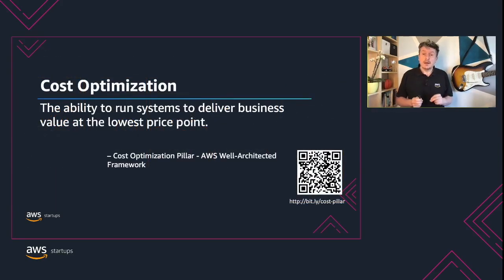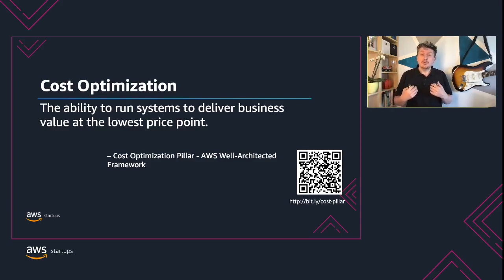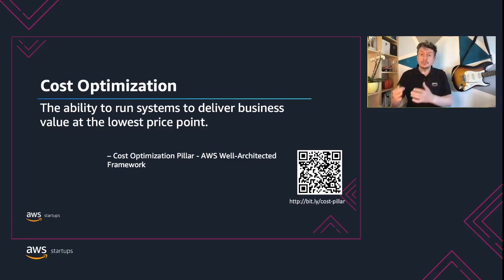Let's first see how we define cost optimization. Cost optimization is the ability to run systems to deliver business value at the lowest price point. We in AWS want you to run your systems on AWS as cost effectively as possible, at the same time providing value to your customers.